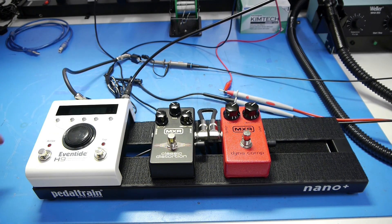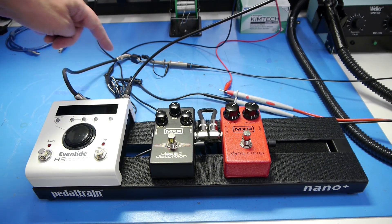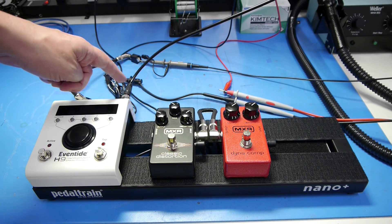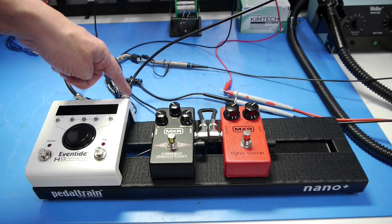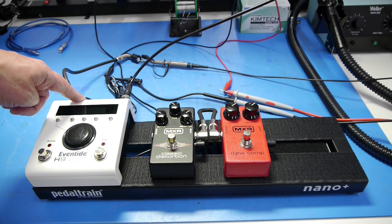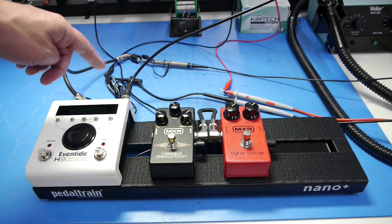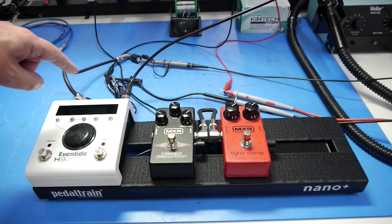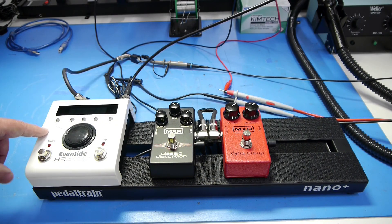Other than that I have a test signal coming out of the signal generator here going into the input. And then on the output side we have the oscilloscope so we can measure that and make sure our test signal is passing through the H9 correctly and there's no unexpected noise or glitches or anything going on on the audio side.